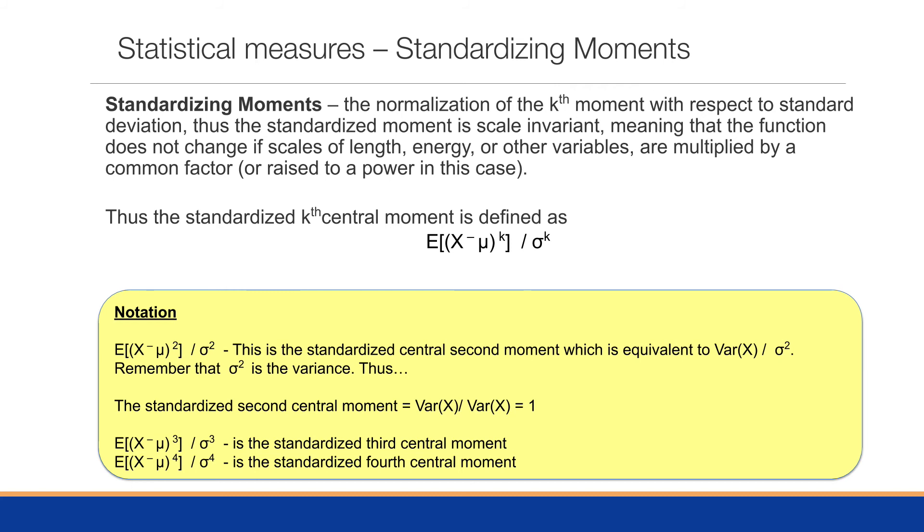If we take the standardized third central moment, it would be the expected value of X minus mu to the third power divided by the standard deviation to the third power. And we do the same thing for the fourth central moment.